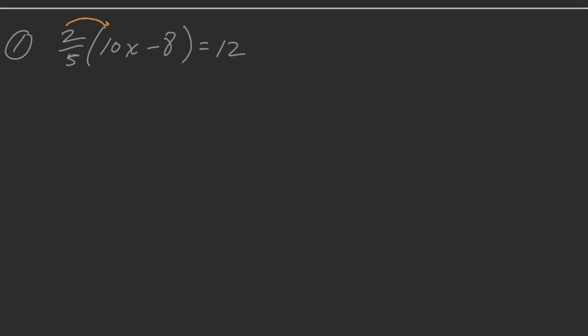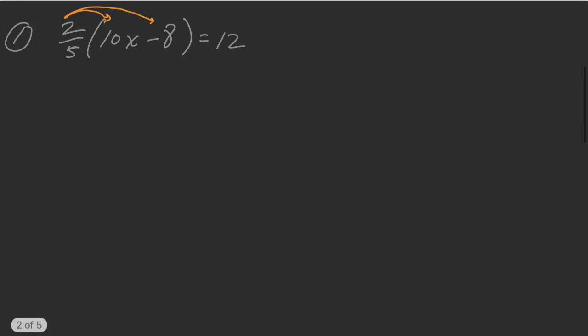So first step, we're going to go ahead and distribute that two-fifths into the parentheses. Remember, when you multiply a fraction times a whole number, you want to multiply the numerators together and the denominators together. So 2 times 10 is 20, 5 times 1 is 5. Same thing here — 2 times 8 is 16, and 5 times 1 is 5, and I'll just bring down that 12.